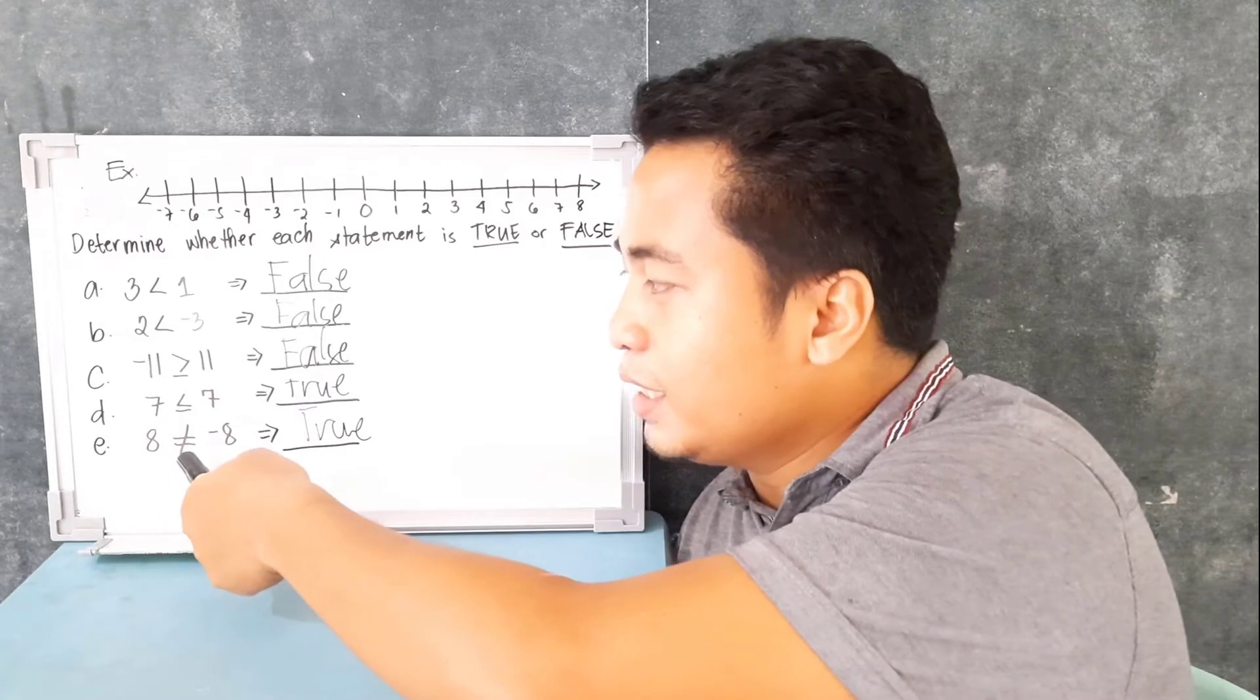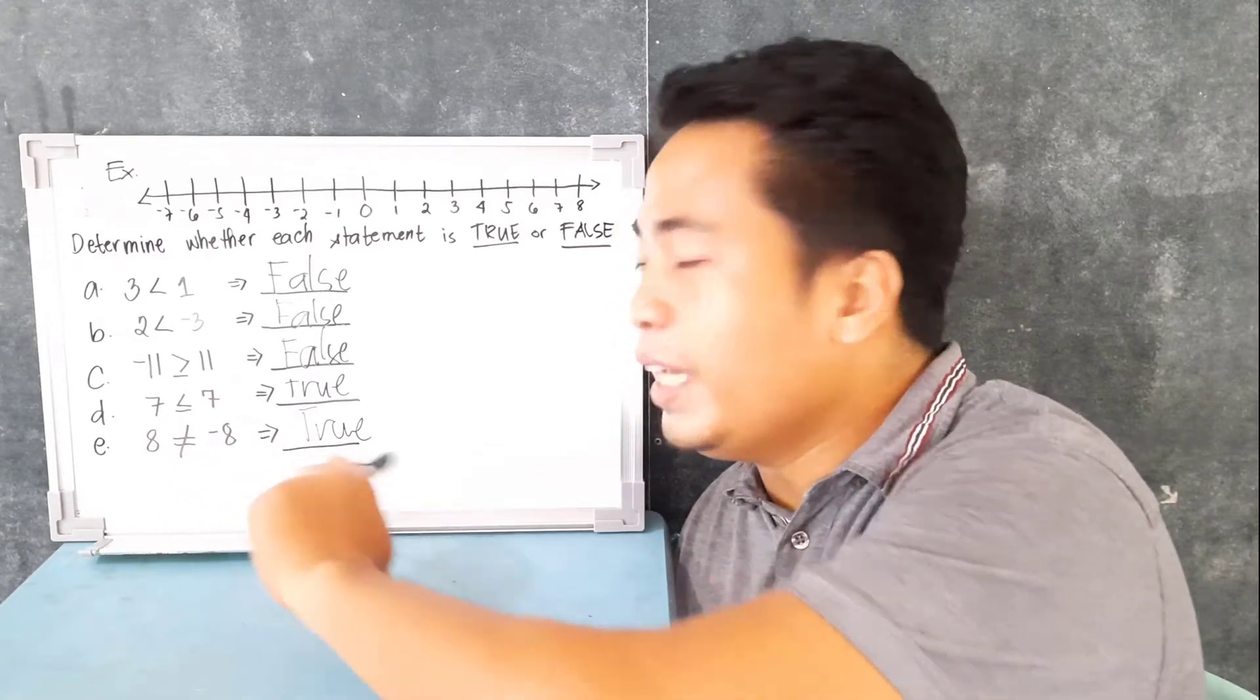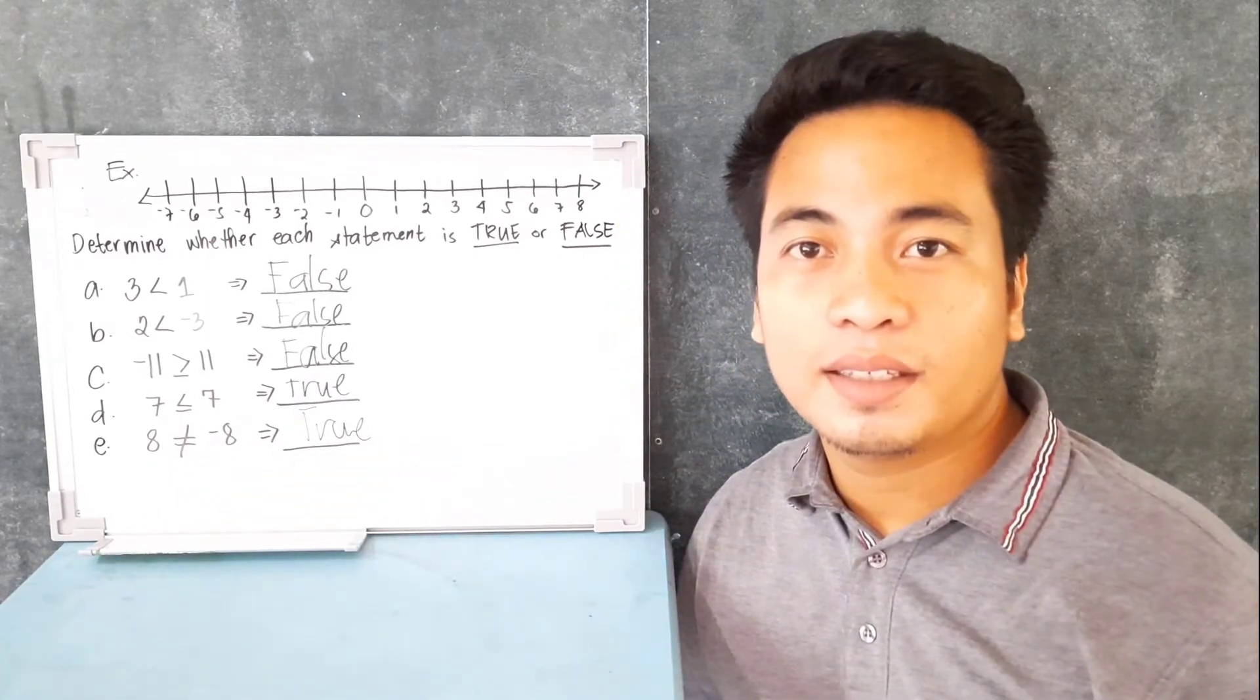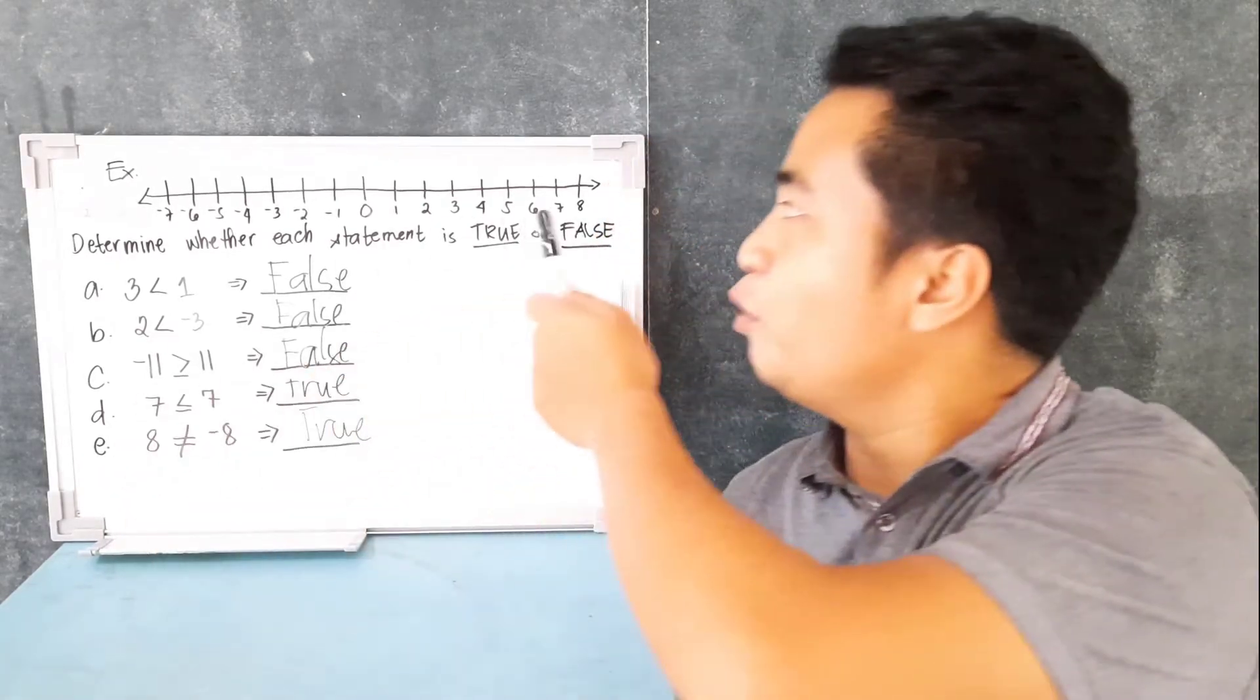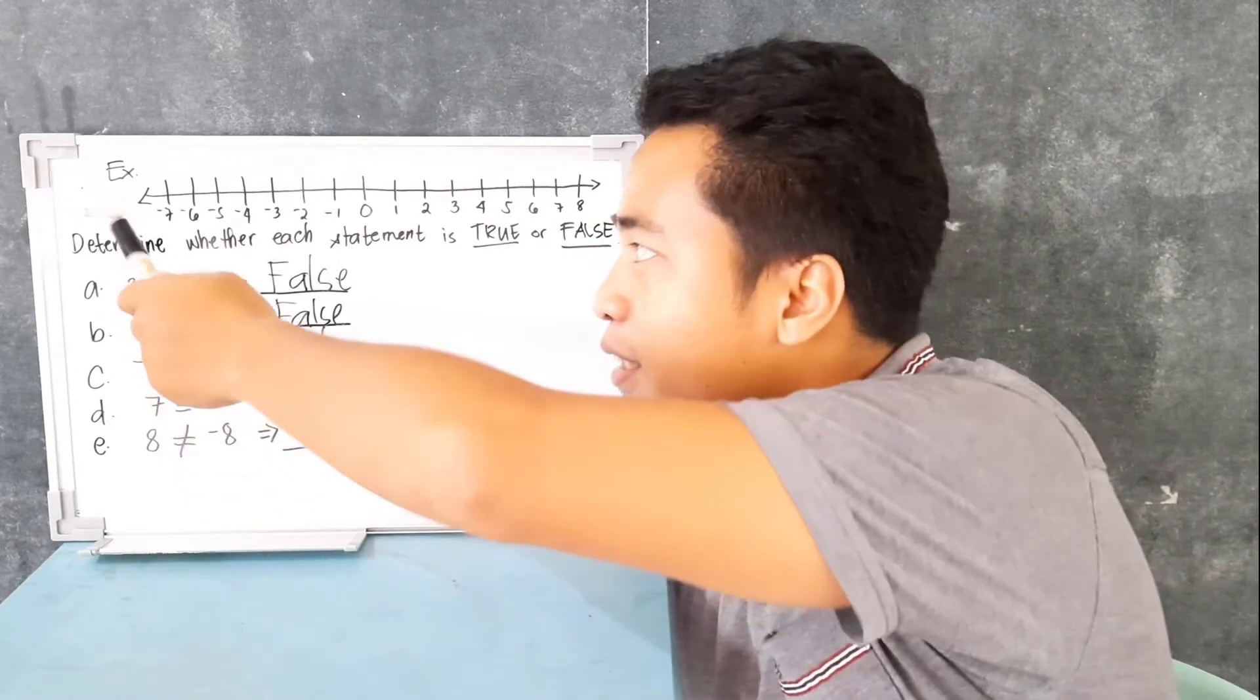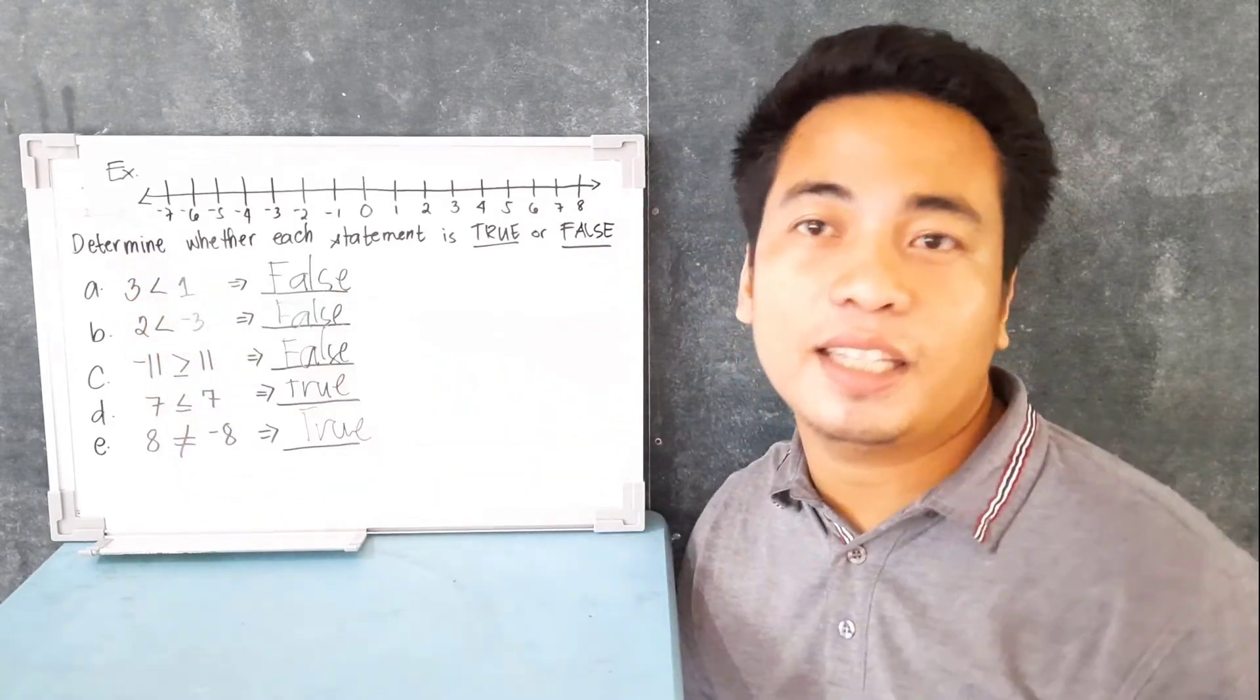What about 8 is not equal to negative 8? Yes, it is true. Why? Because 8 is somewhere here and negative 8 is somewhere there, and they are not equal.